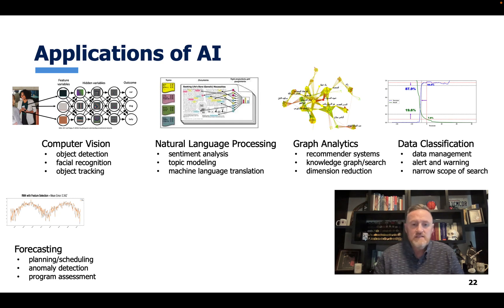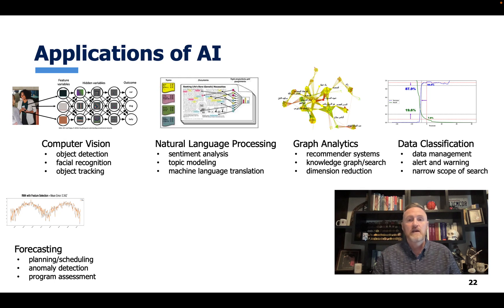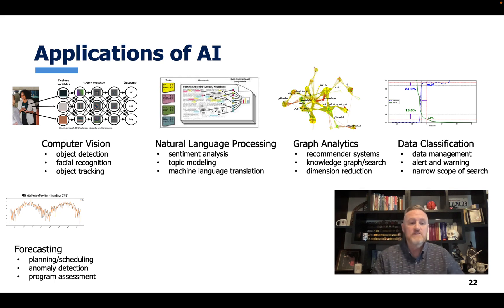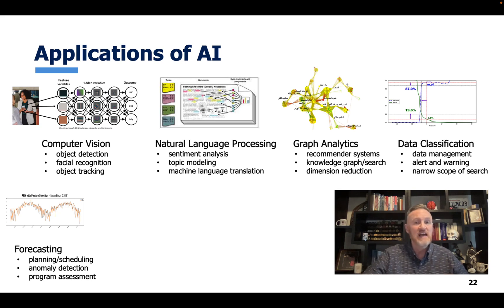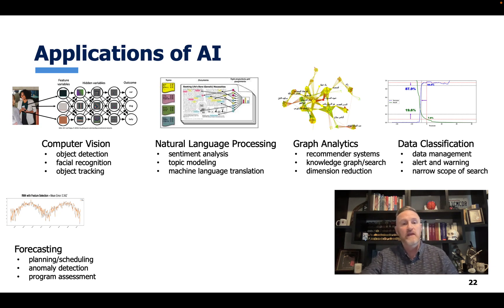Forecasting helps us plan, schedule, reduce anomalies, and assess programs. It's basically looking at data and forecasting what it's going to be. It's more of a data science application, but it can also be improved with AI.